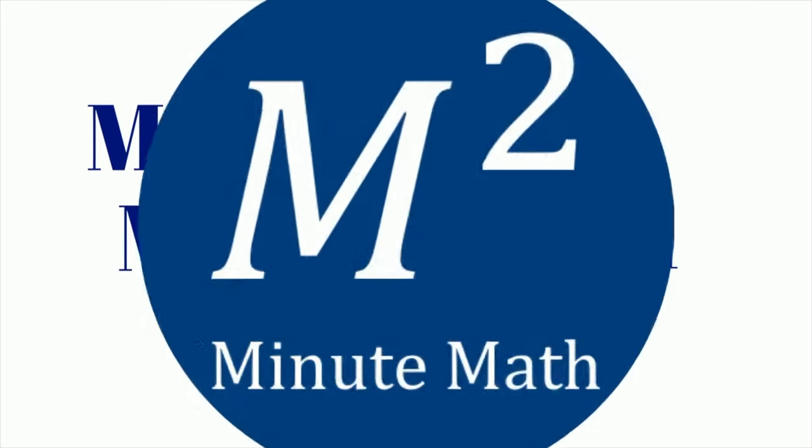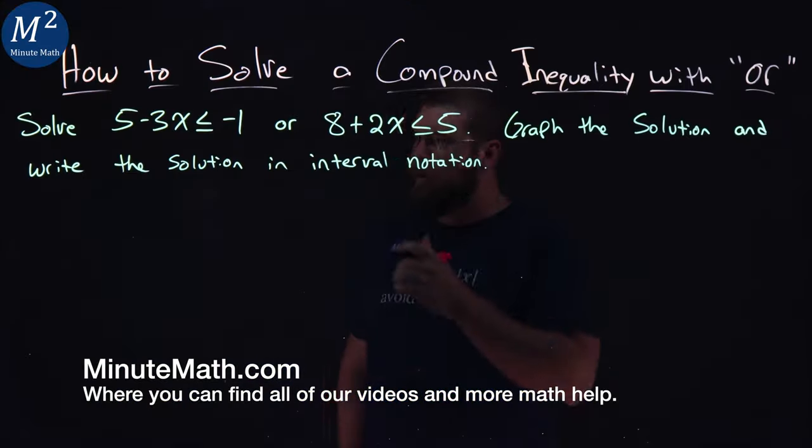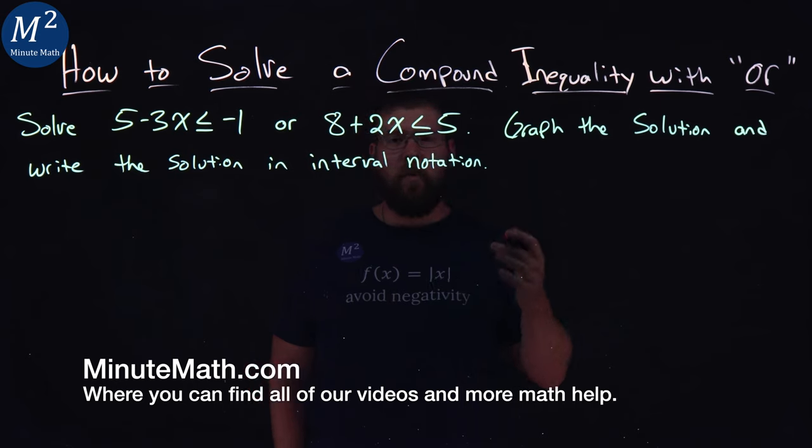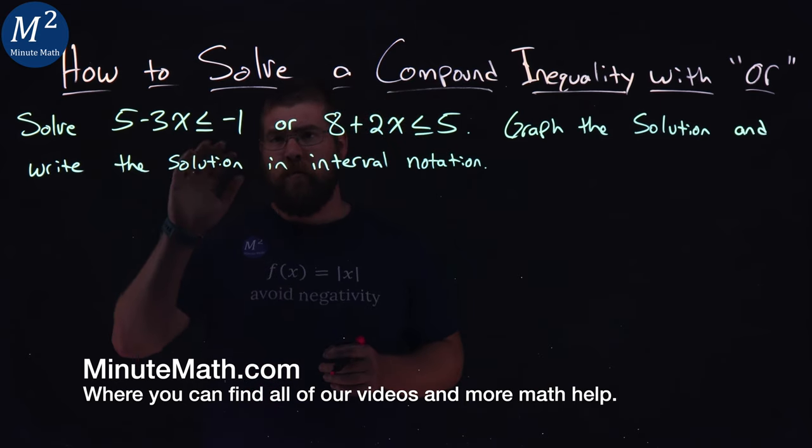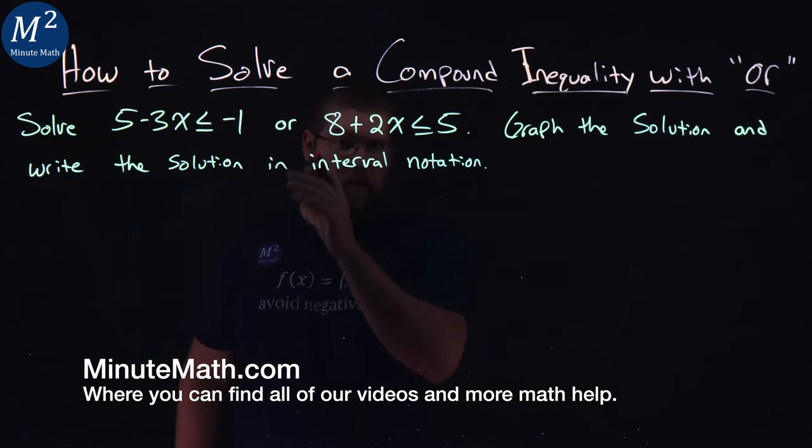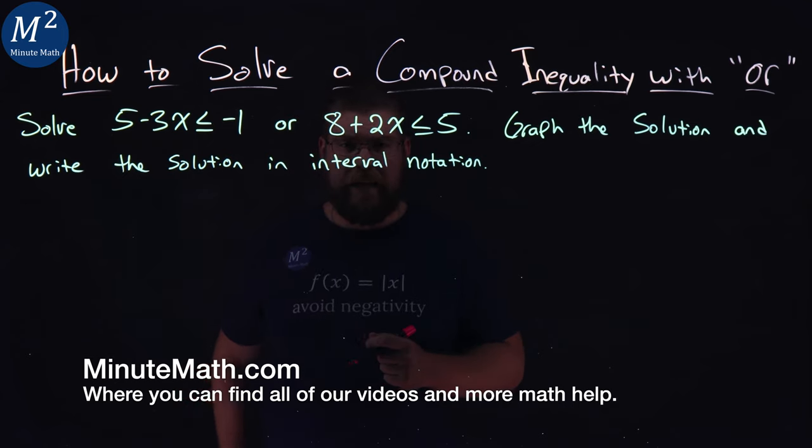A compound inequality with OR really has two statements. We have one inequality and we have another one, and there's a separation of OR, hence the name.